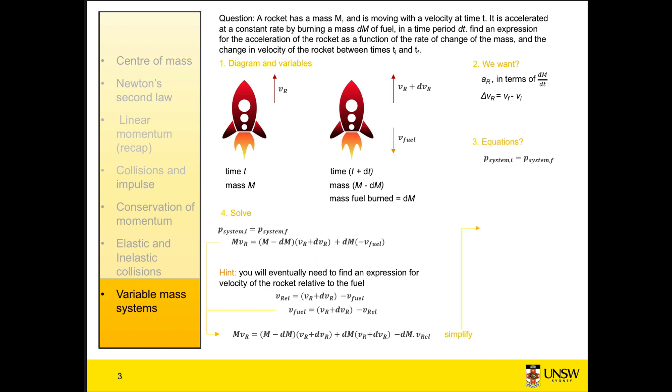We want the acceleration of our rocket, which isn't currently in this equation. But we know acceleration equals the rate of change of velocity. So if we divide through this equation by dt, we have an expression for the acceleration in terms of the rate of change of the mass, as we were asked. We rearrange that equation and we've answered part one.